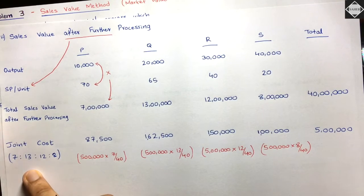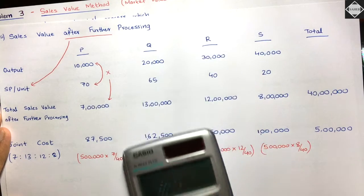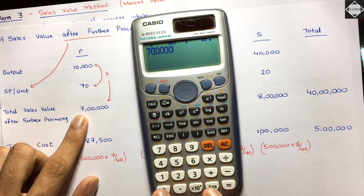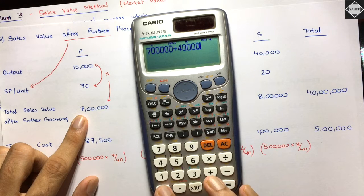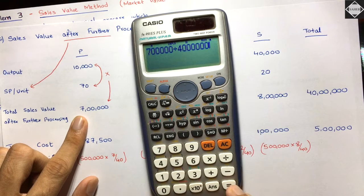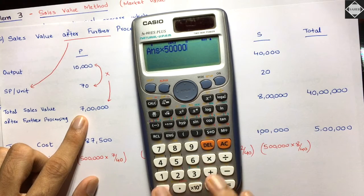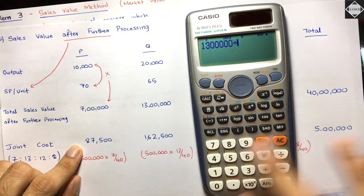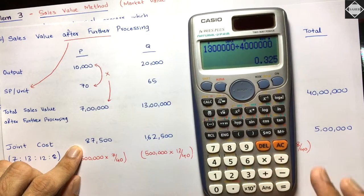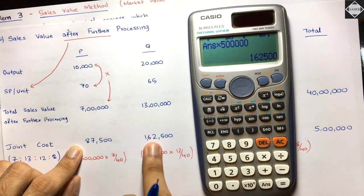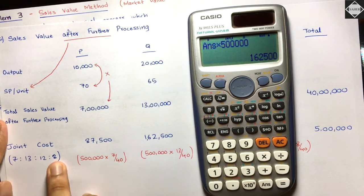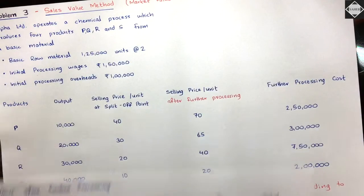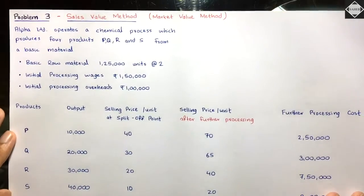If you don't want to use a ratio, you can directly calculate: for example, 7 lakh / 40 lakh × 5 lakh = ₹87,500. Or 13 lakh / 40 lakh × 5 lakh = ₹1,62,500. The same result is obtained either way. That's it for this video — see you in the next one, bye!